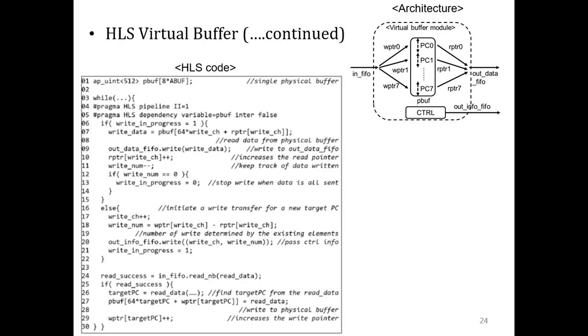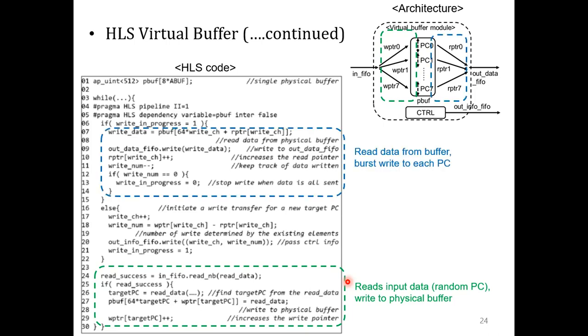The implementation is fully compatible with HLS C without the need for RTL. I won't go into details, but what this code is doing is at every cycle, it reads an input data and writes to one of the buffers. At the same time, it reads the data from the buffer and burst writes to each PC. And at the start of each burst, it sends the transfer information in a control signal.